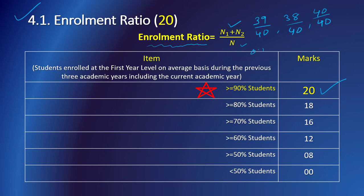The ratios come out to 0.975 for the current year, 0.95 for the previous year, and 1.0. Taking the average of these three, the ratio becomes 0.975, which falls under the row where students' enrollment ratio is more than or equal to 90%. So the visiting team will award 20 marks for such an enrollment ratio. The data must be collected and presented as per SAR format, and all supporting records should be ready for the visiting team's inspection and cross-checking.